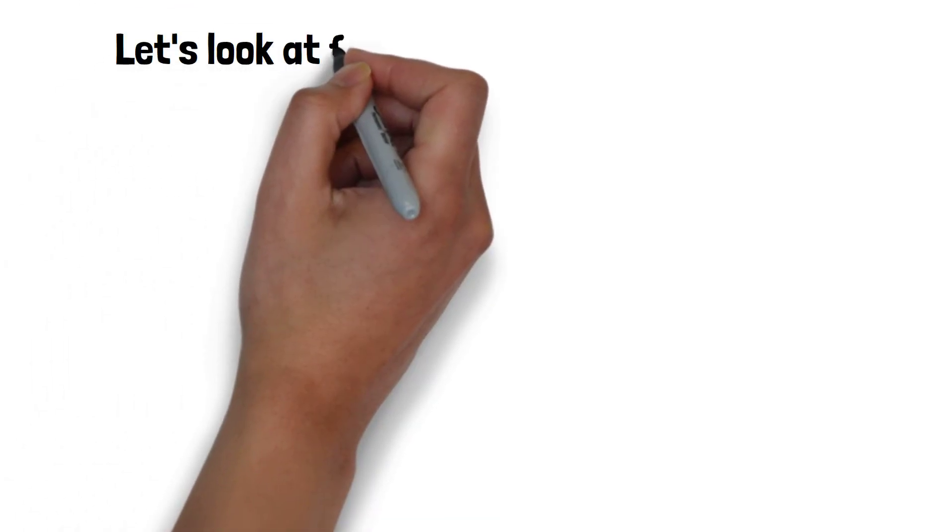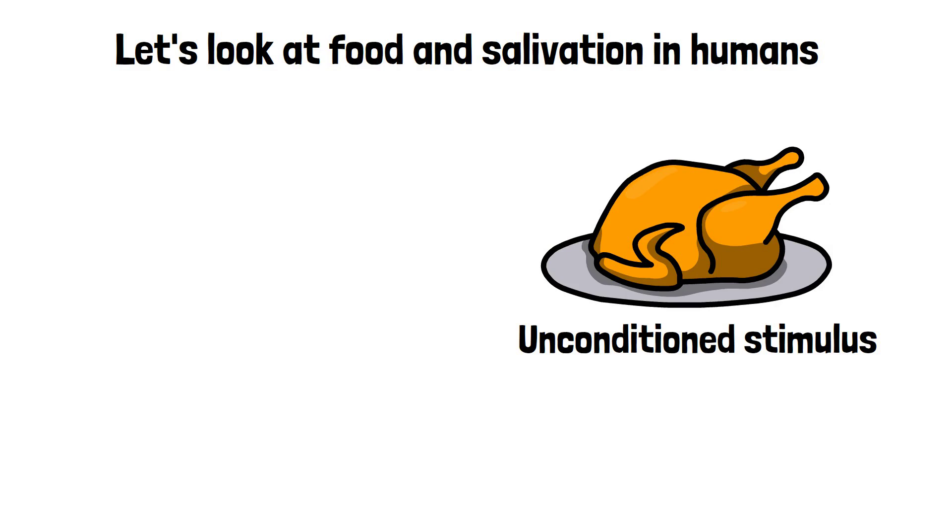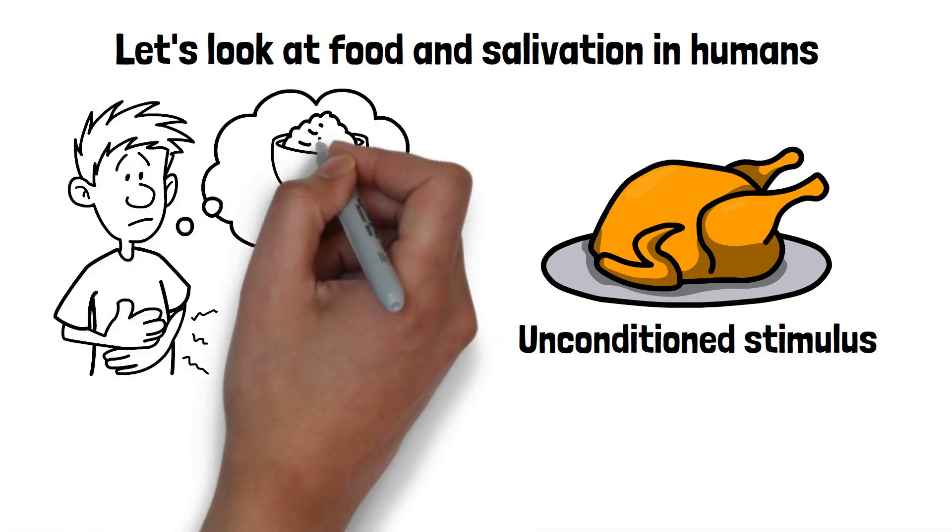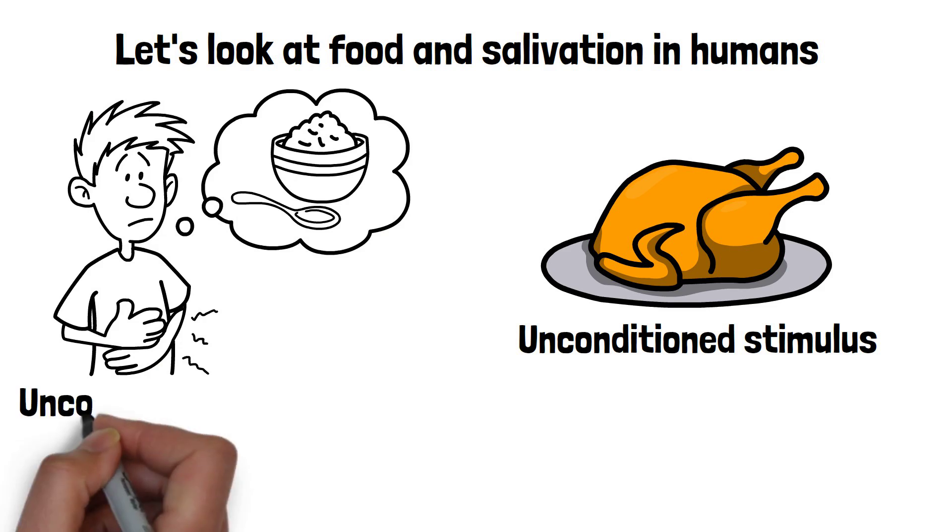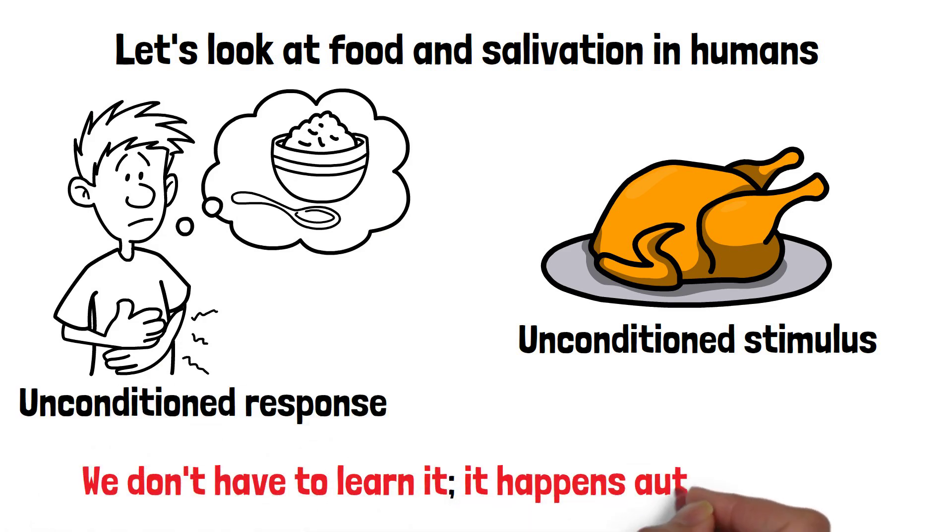First, let's look at food and salivation in humans. Just like with Pavlov's dogs, food acts as an unconditioned stimulus in humans. When we see or smell food, it naturally makes us salivate. This is an unconditioned response because we don't have to learn it. It happens automatically.